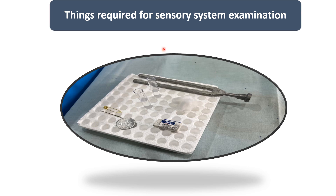The things required for sensory system examination are: a tuning fork at 128 Hz, two test tubes with cool and warm water, a safety pin, a coin, any cuboid or cube-shaped structure, and cotton.